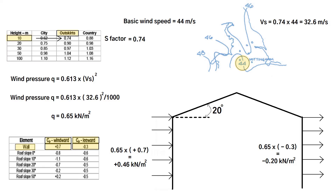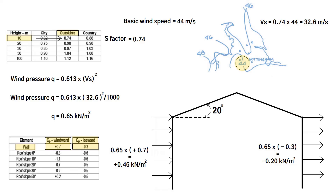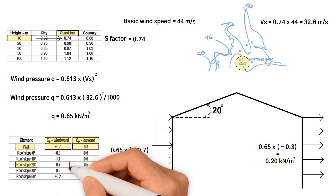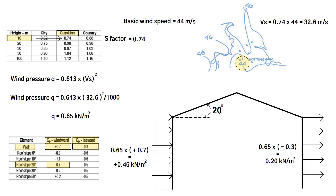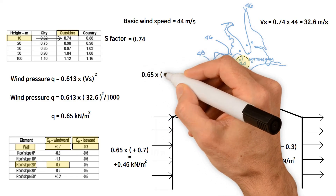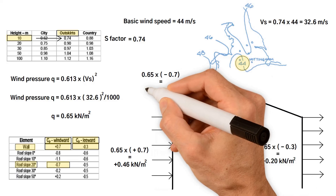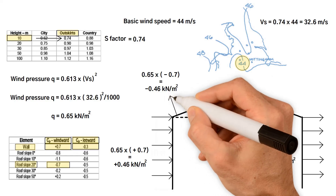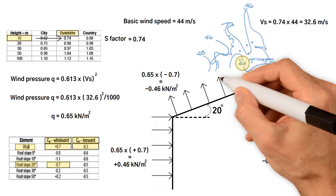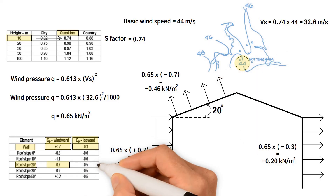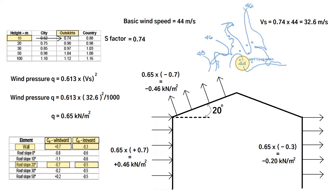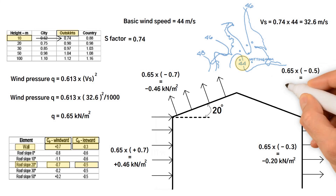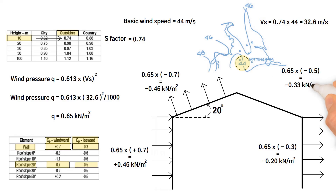The roof is also subjected to negative pressure since it has a relatively small inclination angle. A pressure coefficient for the roof with a slope of 20 degrees on the windward side is negative 0.7. Hence, the windward load equals wind pressure 0.65 times negative 0.7, giving us negative 0.46 kN/m², meaning the wind creates a suction force on the windward roof. The pressure coefficient for the leeward roof is negative 0.5, giving a leeward load of 0.65 times negative 0.5, which equals negative 0.33 kN/m².